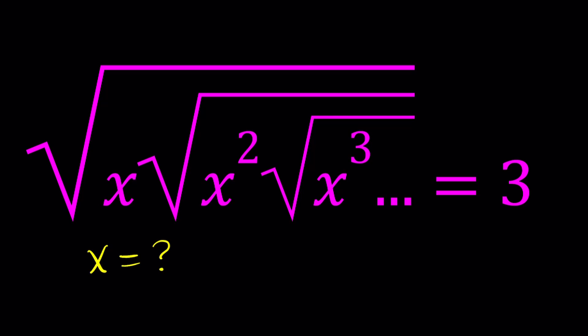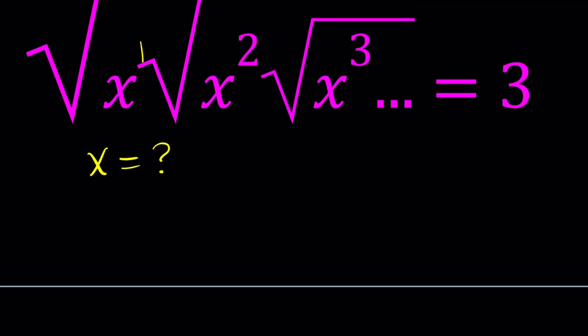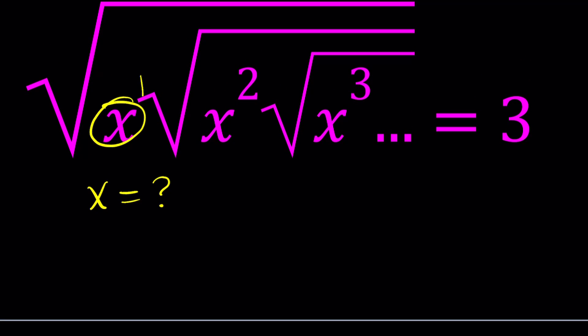To be able to solve this problem — we did similar problems before, hopefully you'll remember this pattern — it's a really nice way to approach things, and you could probably modify this problem, change these powers up a little bit to get a different type of problem. Think about this x here: it's x to the first power, so it's under one radical. We have the square root of x, and I can write it as x to the power one half.